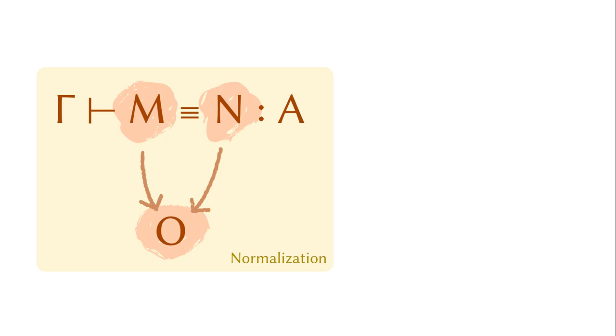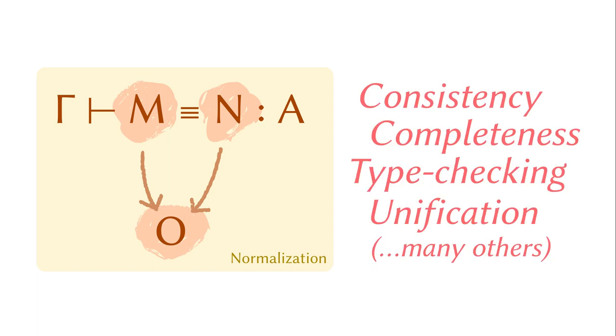Why do we care? From a theoretical perspective, you can easily derive the consistency of type theory from a reasonable normalization theorem. You can also check whether you forgot to say some terms should be judgmentally equal. Moreover, type checking, unification, etc., all rely on the ability to confirm two things are equal.